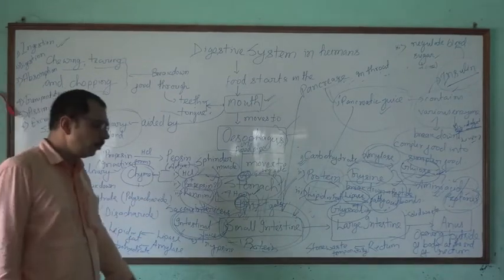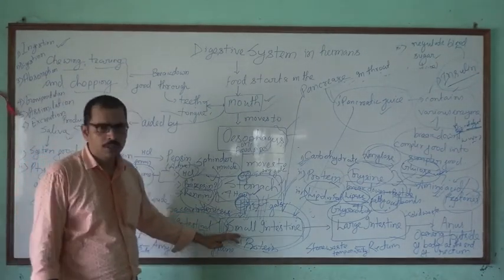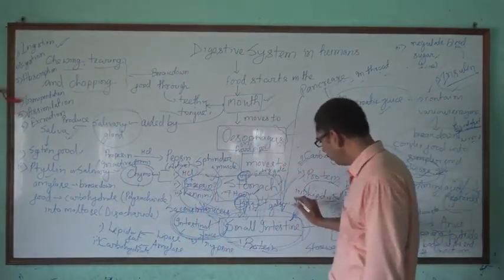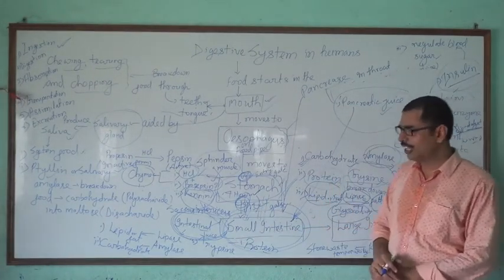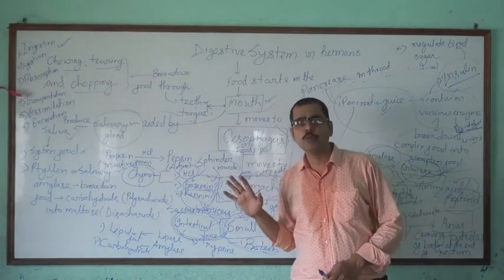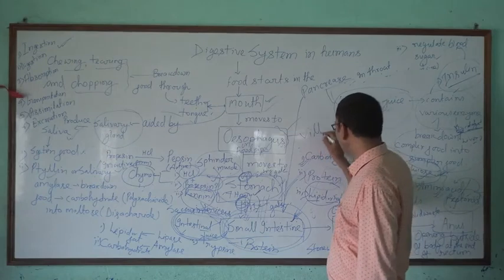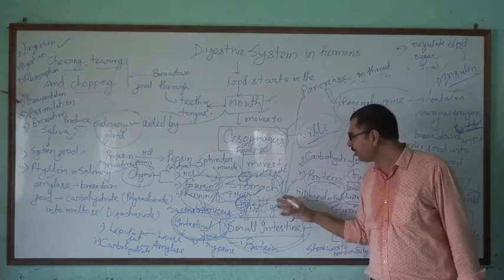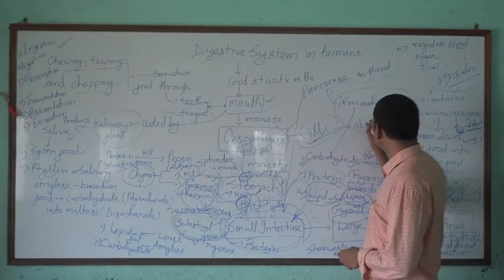These enzymes ensure that complete digestion takes place inside the small intestine. In the small intestine, all digestive processes are completed. The small intestine has finger-like projections called villi, which facilitate absorption.